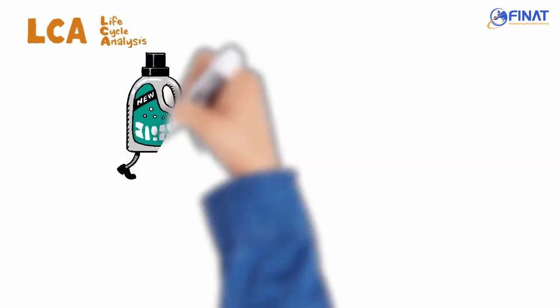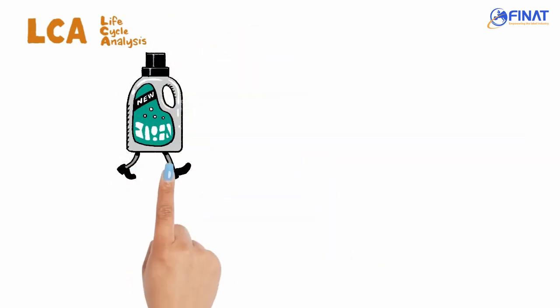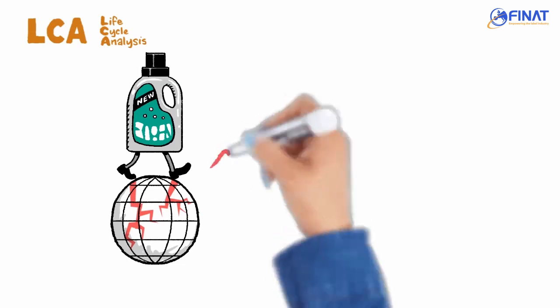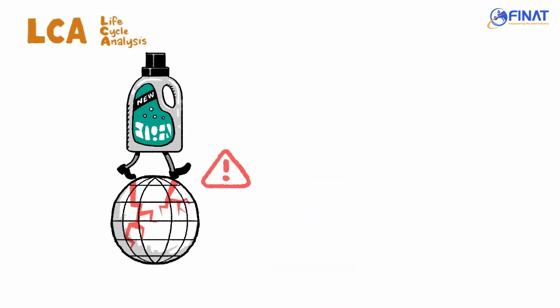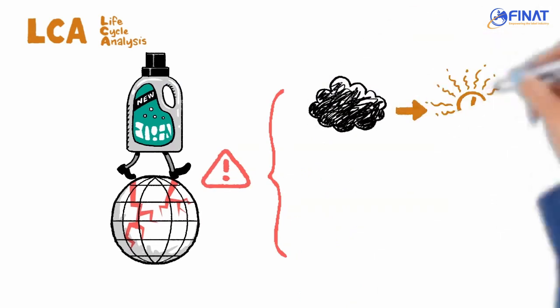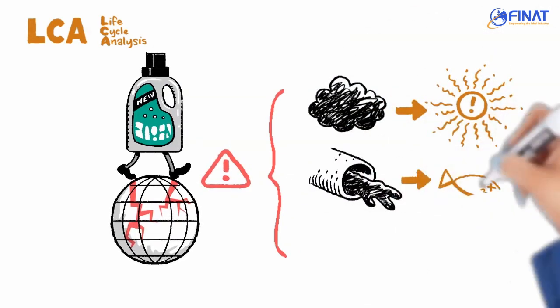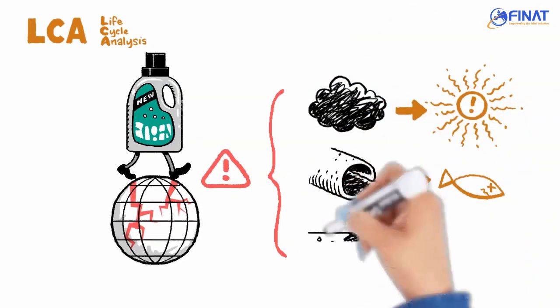LCA, or Life Cycle Analysis, is a methodology designed to help measure and quantify the end-to-end environmental impacts of a product, process, or service. LCA considers not only the greenhouse gas emissions but also the impacts on other resources, which may include water and soil.